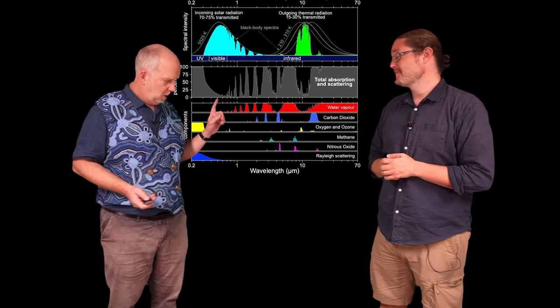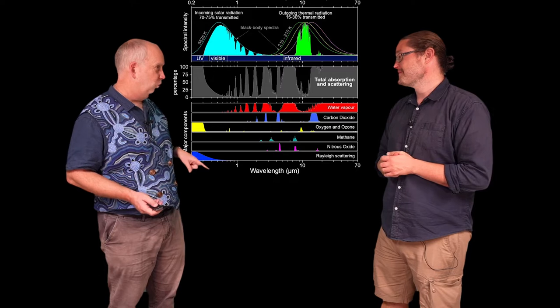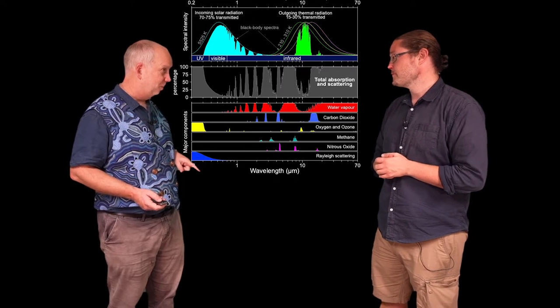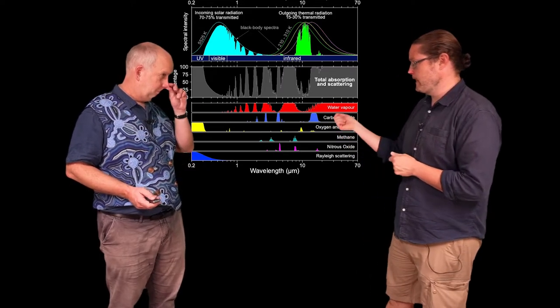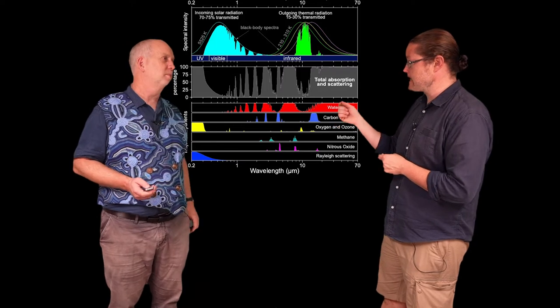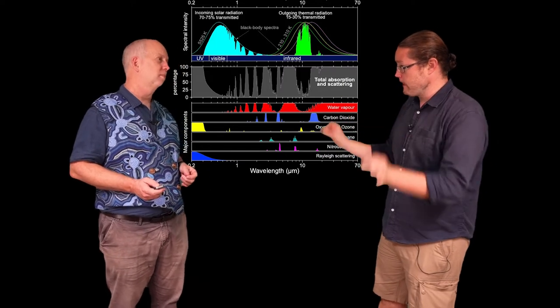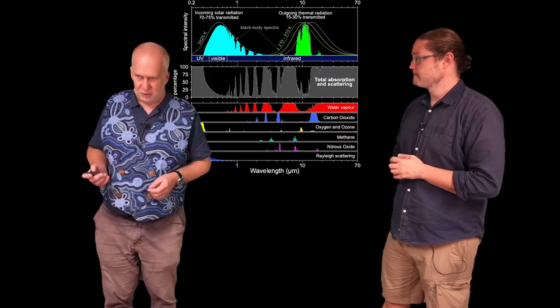So what you can see down here is different chemicals and which wavelengths they block. So different elements or chemicals or molecules block different types and different wavelengths. Let's think about how this works.